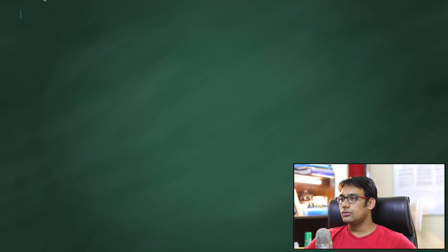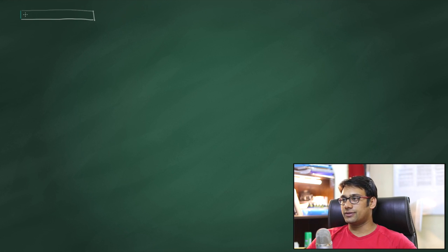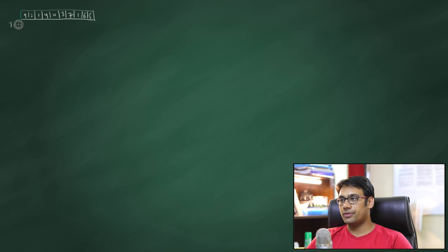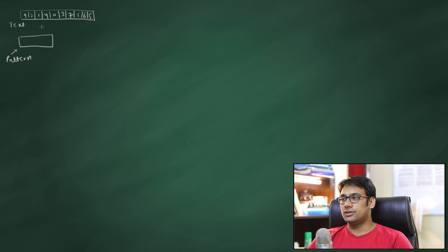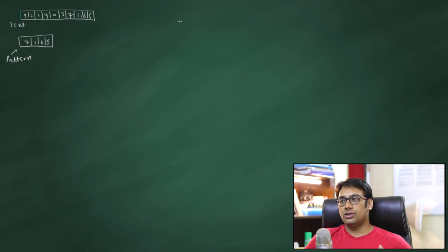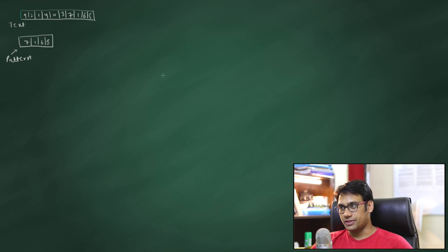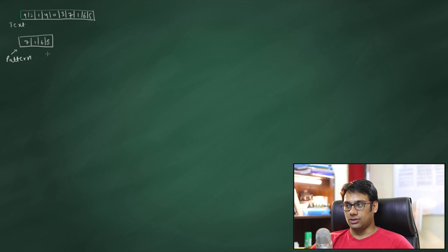Consider this: we have a text sequence 9, 2, 1, 4, 0, 3, 7, 1, 6, 5. We also have a pattern with digits 7, 1, 6, 5. We are going to use a total of 10 symbols, so we can consider a number system with base 10. This makes it very easy to find the numerical value of the pattern. The pattern length is m and the text length is n.